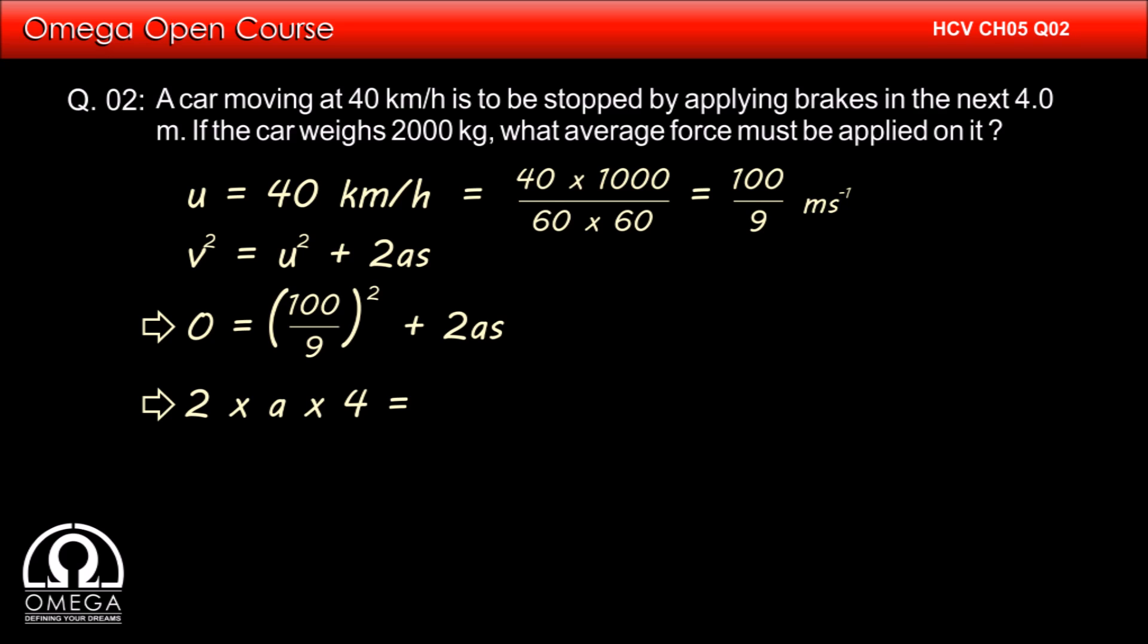Which implies 2 times a times 4 equals negative 100 times 100 divided by 9 times 9, or a equals negative 100 times 100 divided by 81 times 8 meters per second squared.